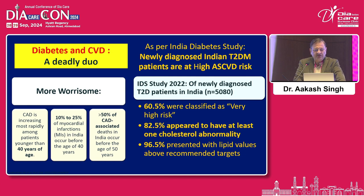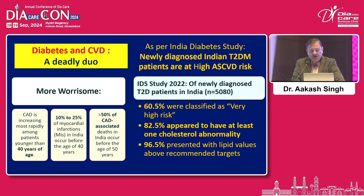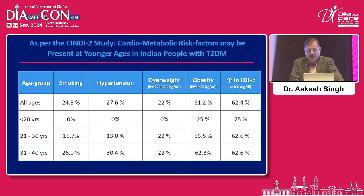Diabetes and CVD is more worrisome because CVD is increasingly affecting younger people in India — patients less than 40 years of age are involved. 10 to 25 percent of MIs in India occur before 40 years of age. More than 50 percent of CKD-associated deaths in India occur before the age of 50 years. As per the India diabetes study, newly diagnosed Indian type 2 diabetes patients had a high CVD risk, and 60.5 percent were classified as very high risk.